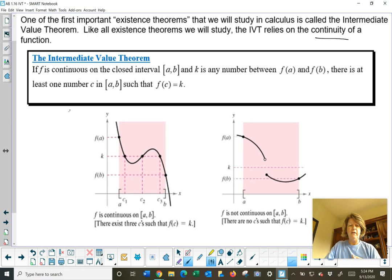If f is a continuous function on the closed interval [a,b], and k is any number between f(a) and f(b), there is at least one number c in the interval [a,b] such that f(c) equals k.